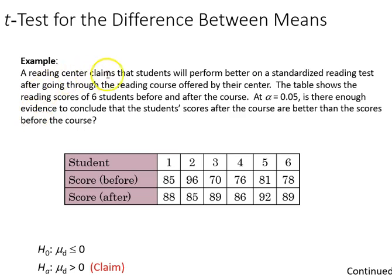Here's an example. We have a reading center that claims students will perform better on a standardized reading test after going through the reading course offered by their center. This table shows the reading scores of six students, and note that they're dependent because it's the same six students that we're comparing, so they're paired. It's a before and after score based on going through a reading center. At the alpha 0.05 level, we're testing whether or not there's enough evidence to conclude the student's scores after the course were significantly better than they were before the course.